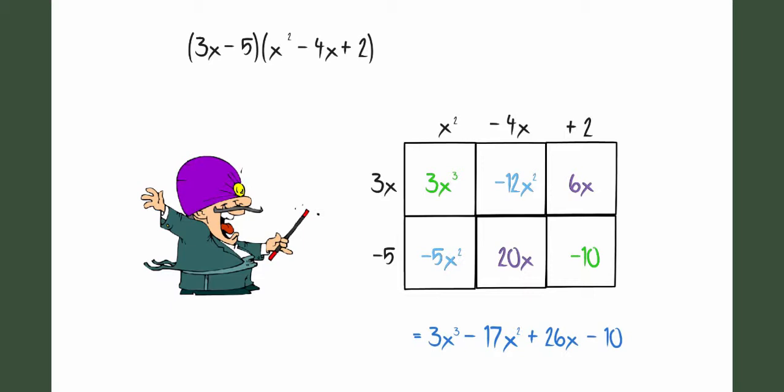So that would give me 3x to the third minus 17x squared plus 26x minus 10.